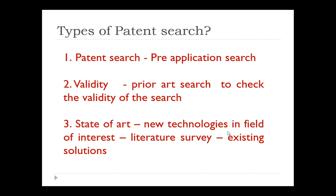For example, the 3D printer patent expired in 2005. Many patents were filed after that, but not with the same technology — the technology was modified or value was added to bring it as a better invention. So what is the use of validity search? It enhances the efficiency of our invention — we can see expired patents and further improve our product.